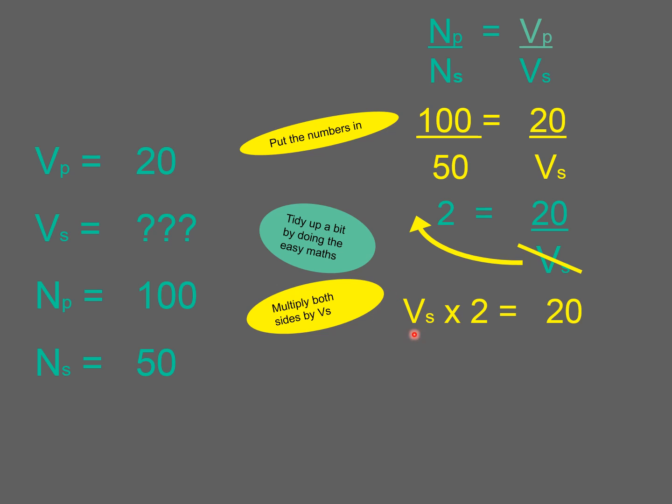But I need this VS all by itself. This is going to be the subject and the subject needs to be by itself. Let's get rid of this. And there we go. The rules for rearranging are just the same, but we have to do it twice. We have to do it twice because the thing we were after, the VS, was at the bottom. We had to get it to the top and then we had to get rid of the other thing.